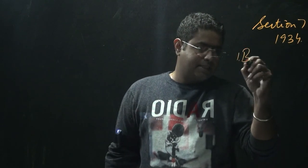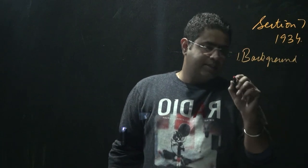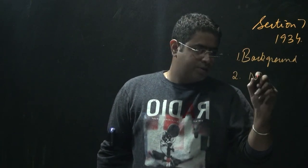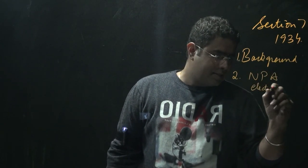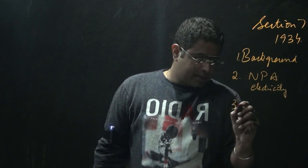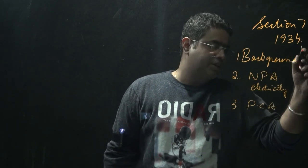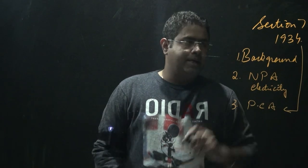So first, understand the background of this. And secondly, we will be understanding the issue of non-performing assets in the electricity sector. Thirdly, we will be understanding prompt corrective action and how this is related to Section 7 of RBI Act 1934.